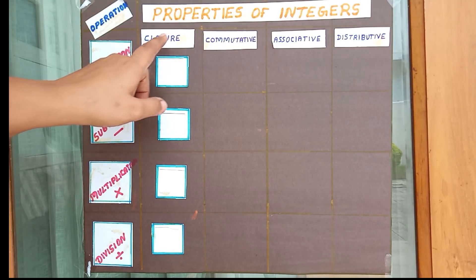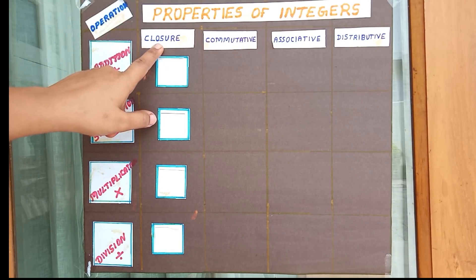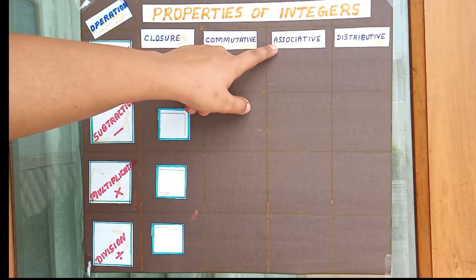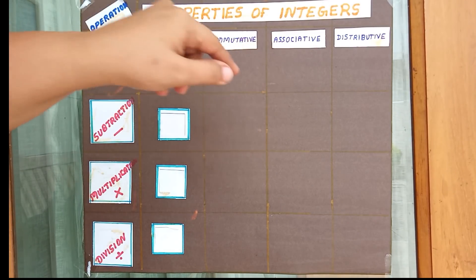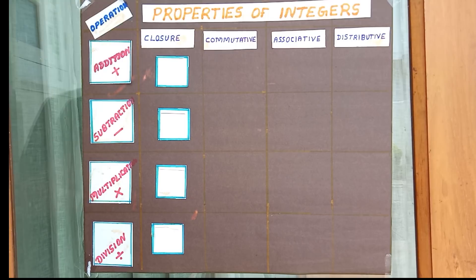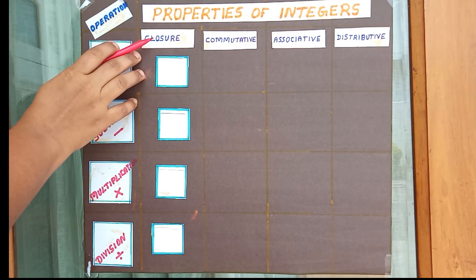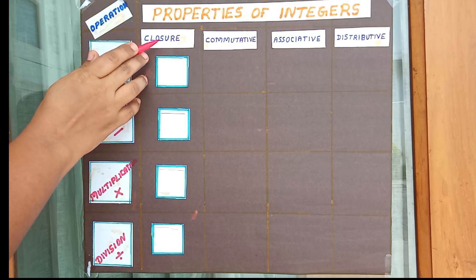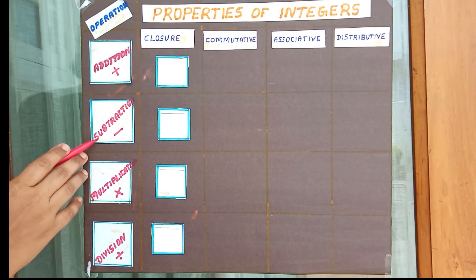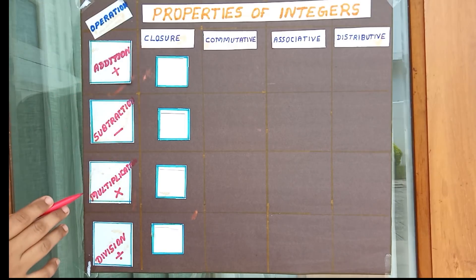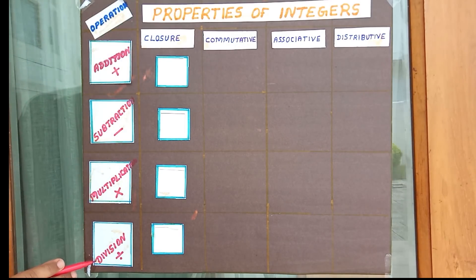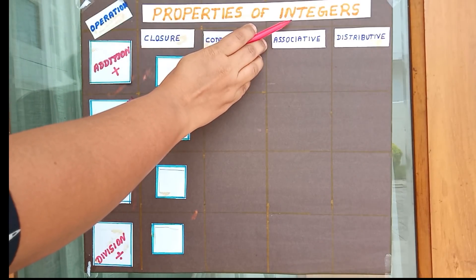First property of integers is closure property. Second one is commutative property. Third one is associative property. And the last one is distributive property. Today we can discuss the closure property of addition, closure property of subtraction, closure property of multiplication, and closure property of division on the integer set.